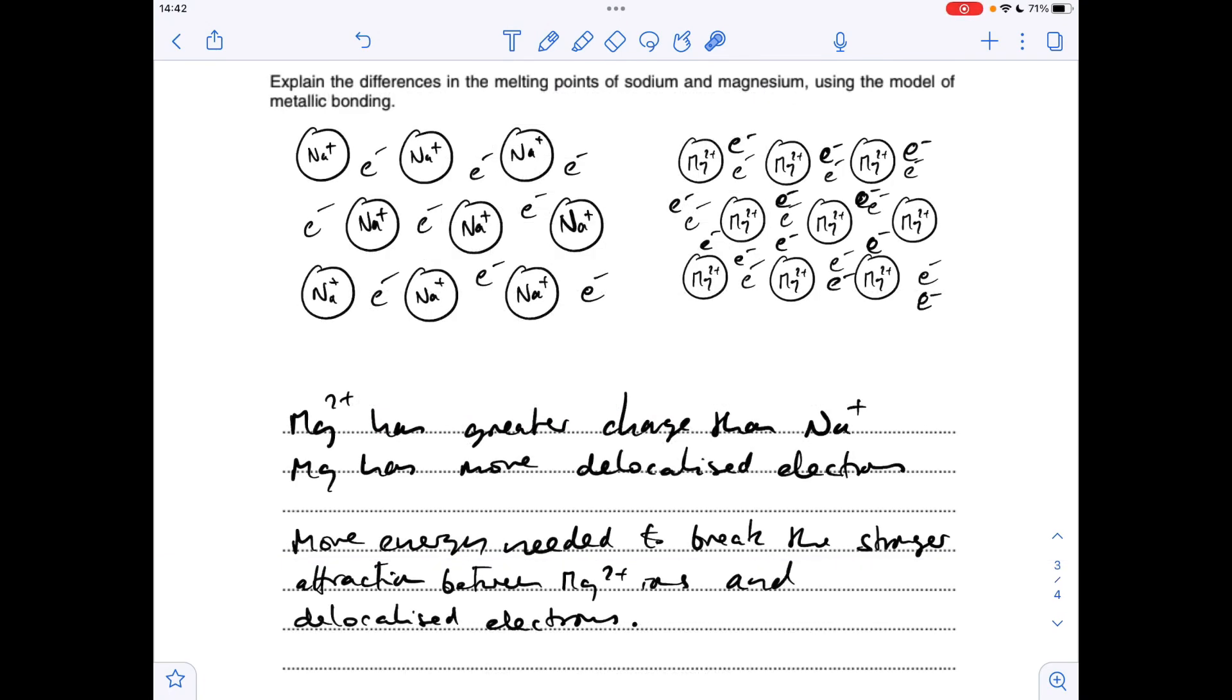Moving on to the next question about the difference in the melting points of sodium and magnesium, so I've drawn a couple of metallic bonding diagrams to help explain this one. So you can see in the magnesium, we've got a greater charge, 2 plus, versus 1 plus for sodium.